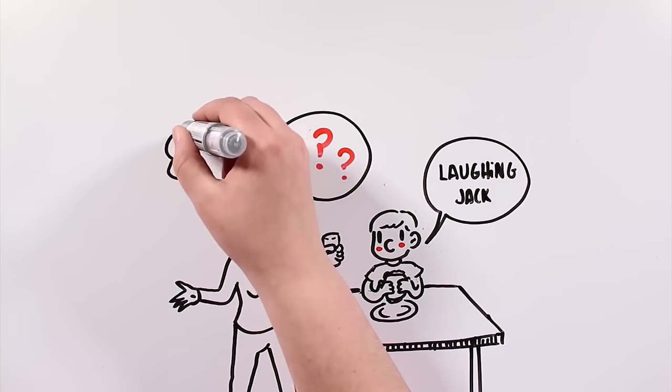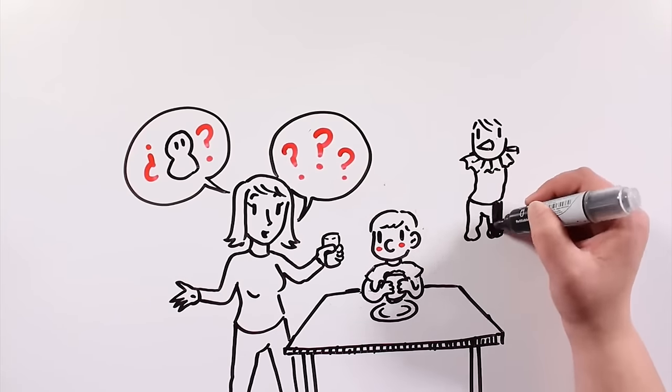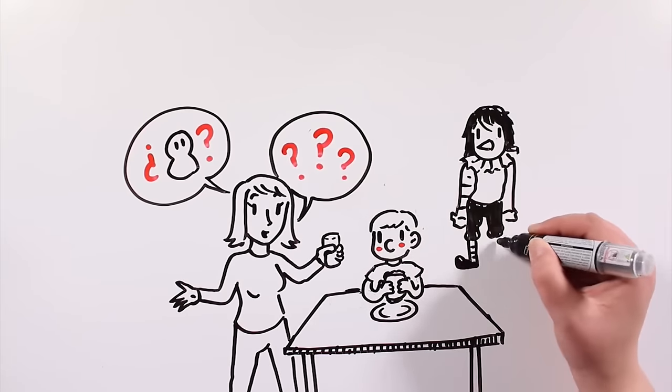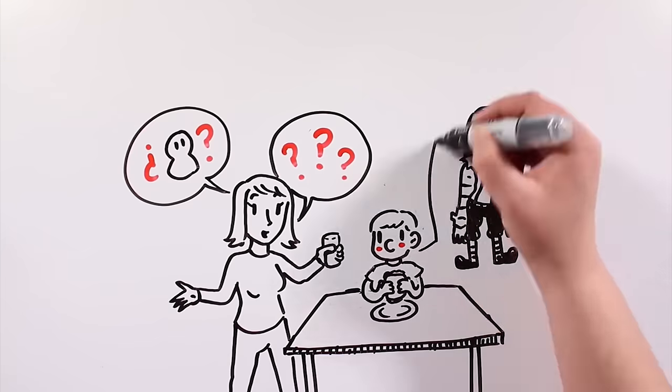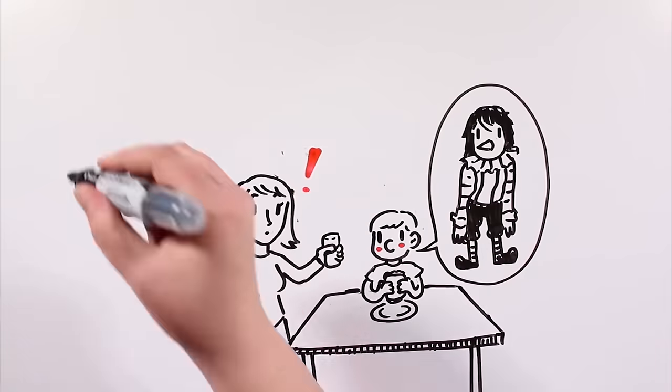'He's a clown, he has long hair and a big nose, long arms and big pants, with striped socks and he's always smiling.' At that moment I realized that my son was talking about an imaginary friend.